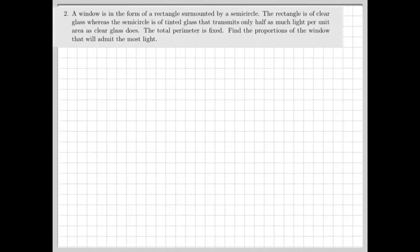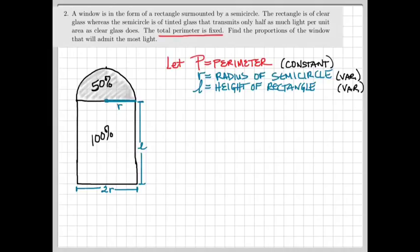As always, the first thing we want to do is draw a picture to represent the situation. In this case, we have a rectangle, and on top of the rectangle is a semicircle, surmounted. This is about the only use of the word surmounted in the entire English language.